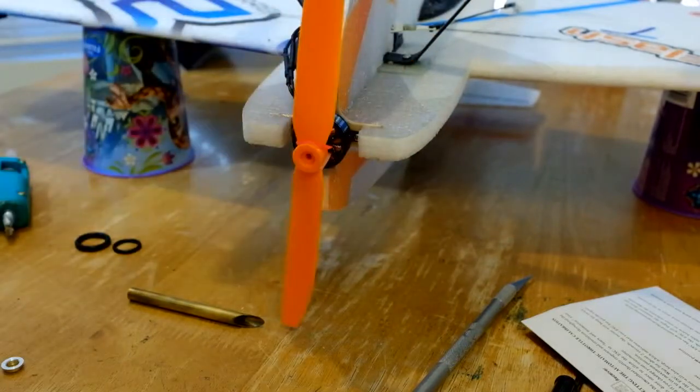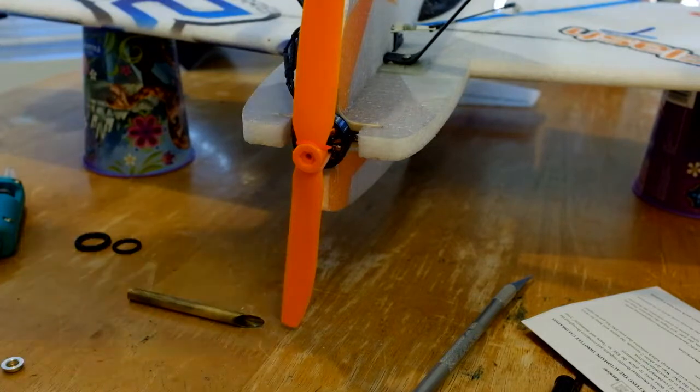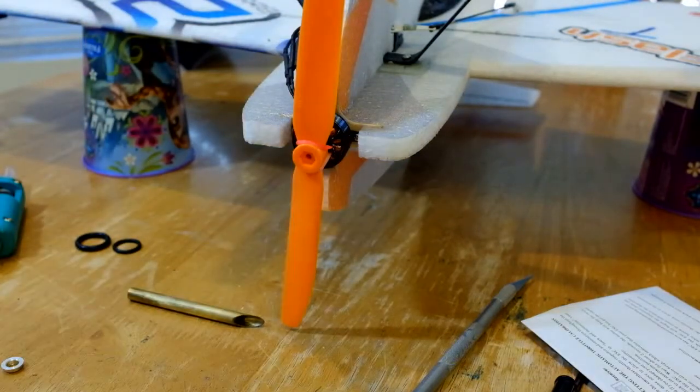Anyhow, that's how you install your prop. Now we're going to use our hot glue gun and mount up all of our servos, our ESC, and our receiver.